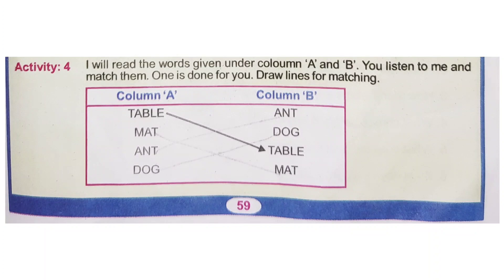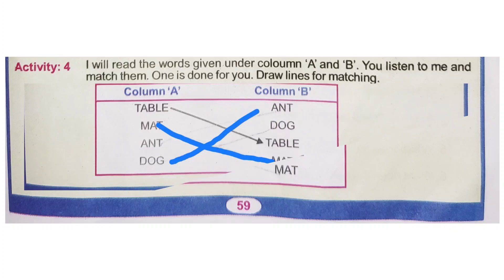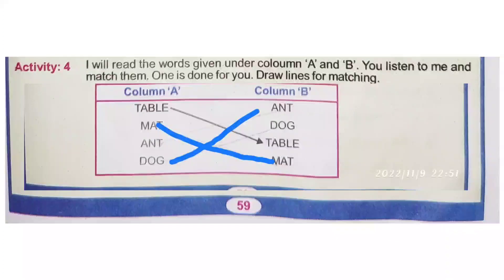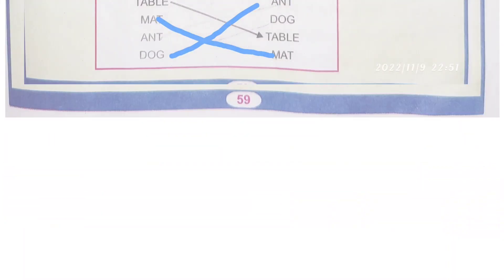Table. Column B — I will give it to you. Table, match the mat. Ant. Dog is done for you.